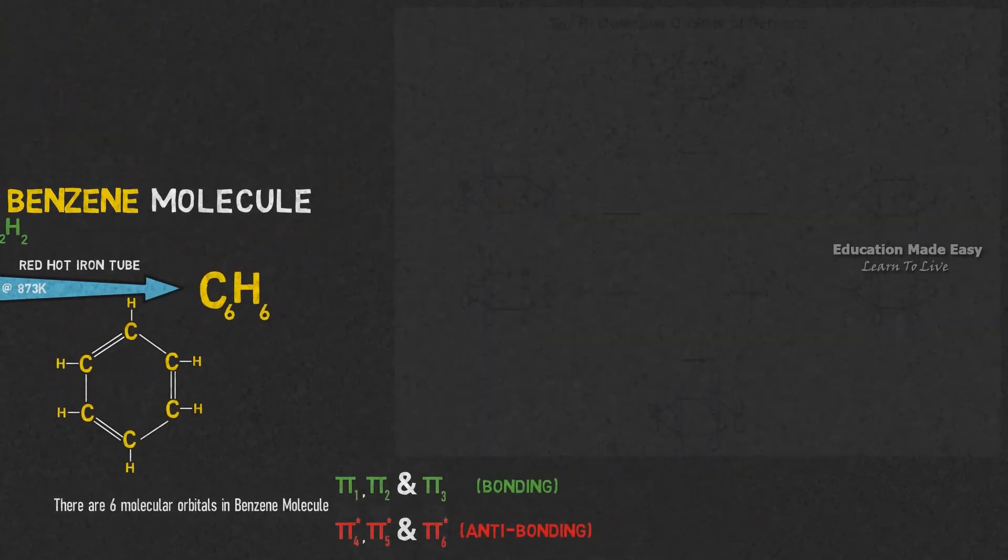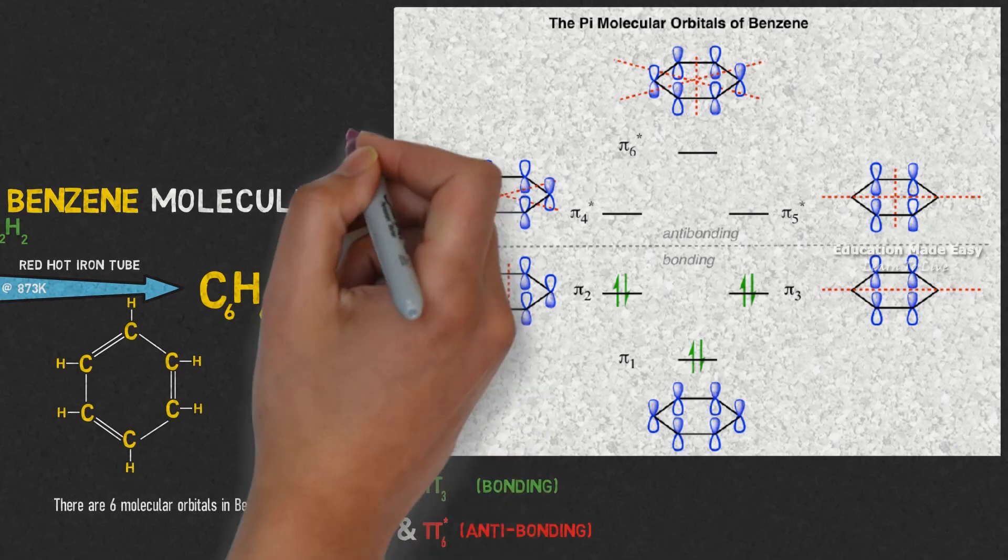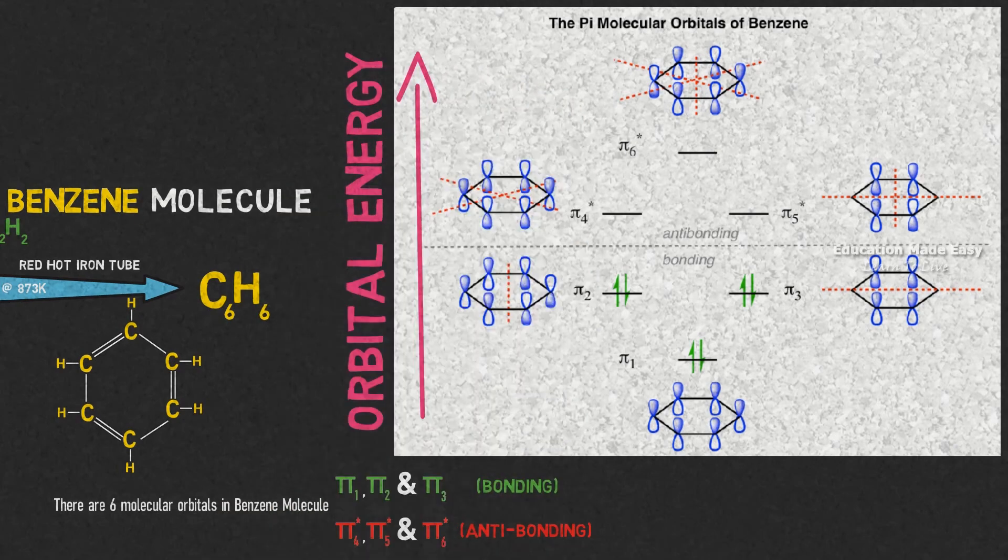The molecular energy diagram of benzene is shown in the picture. The orbital energy of the molecular orbitals increases in the upward direction.